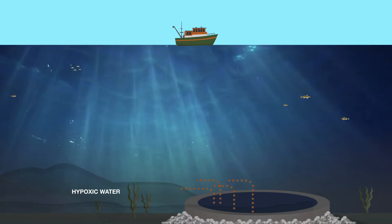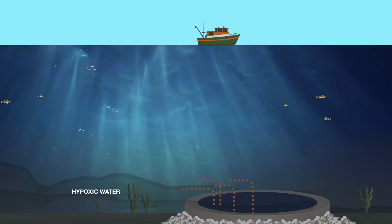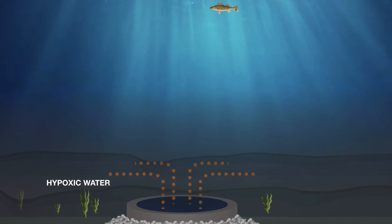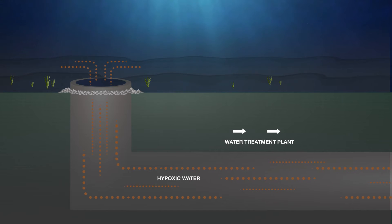This hypoxic water travels with the general lake flow and can make its way to one of the submerged cribs. The hypoxic water, with dissolved iron and manganese and low pH, can then enter the intake tunnel and head toward the treatment plant.